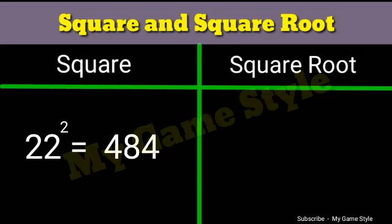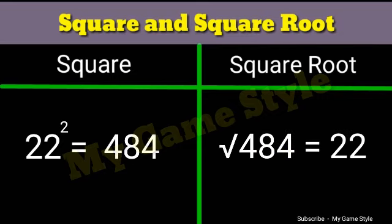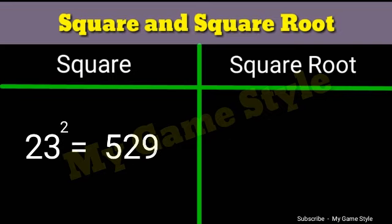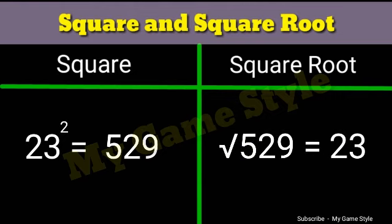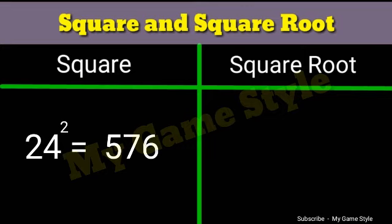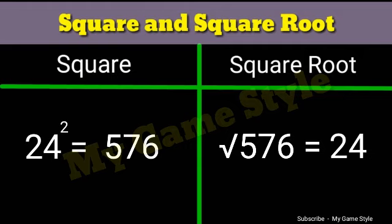Twenty-two square is equals to 484. Square root 484 is equals to 22. Twenty-three square is equals to 529. Square root 529 is equals to 23. Twenty-four square is equals to 576. Square root 576 is equals to 24.